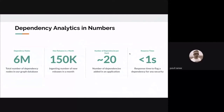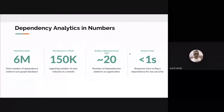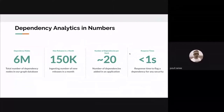Looking at some numbers: we have more than six million nodes in our graph representing packages and version information. On a monthly basis, we have more than 150,000 active ingestions happening. On average, a user's stack contains around 20 dependencies. For component analysis — the LSP calls scanning the manifest file — our response time is around one second, and most of the time it's less than one second.